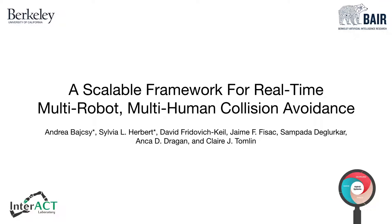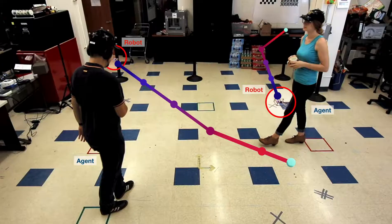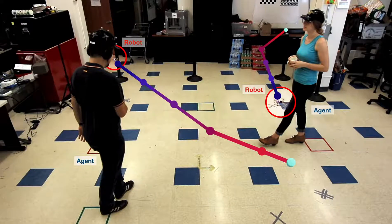This video introduces a scalable framework for real-time multi-robot multi-human collision avoidance. Consider this scenario with two quadcopters and two humans. We would like to guarantee that the robots will reach their goals without ever colliding with static surroundings, humans, or each other.